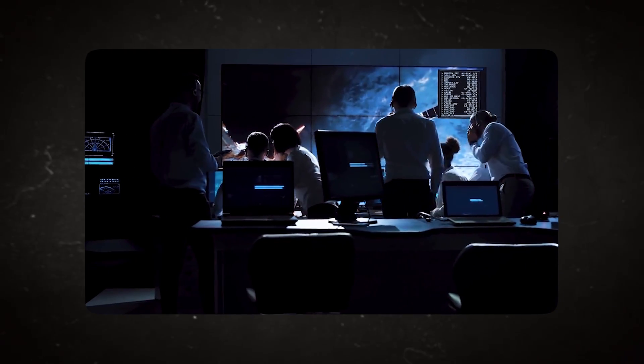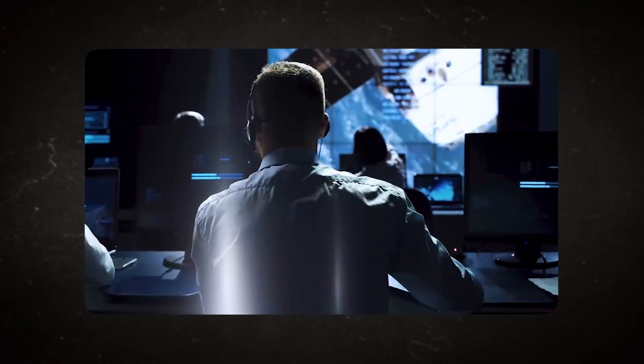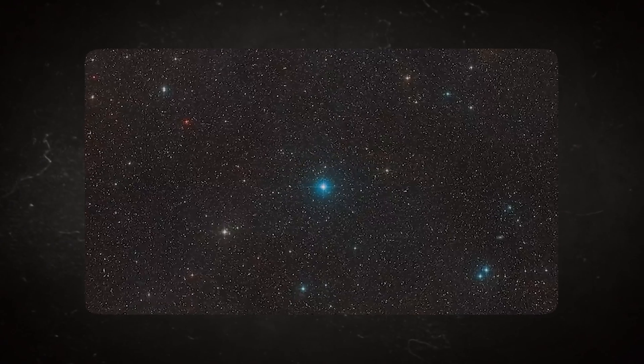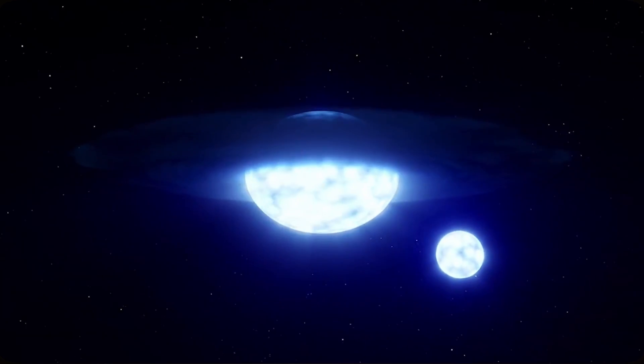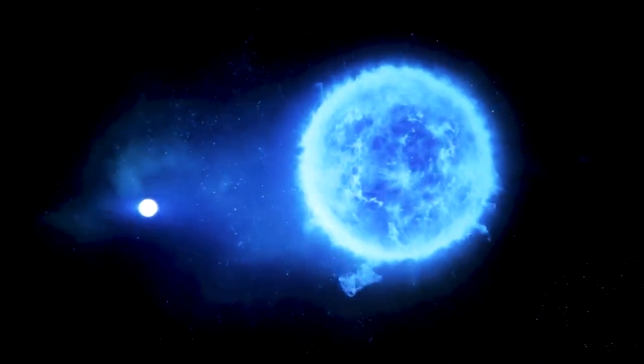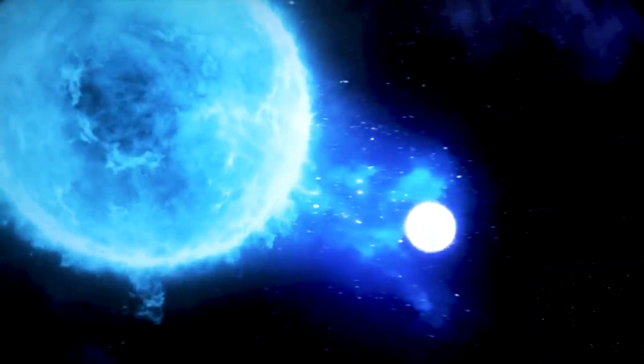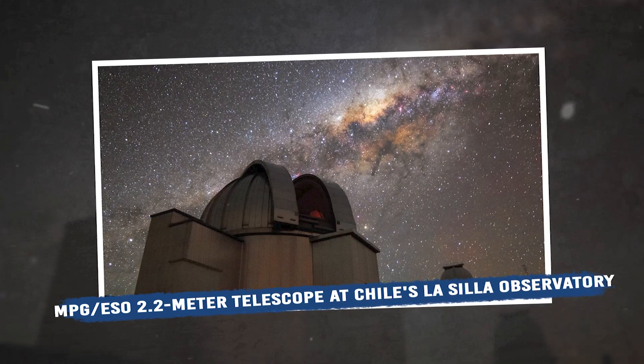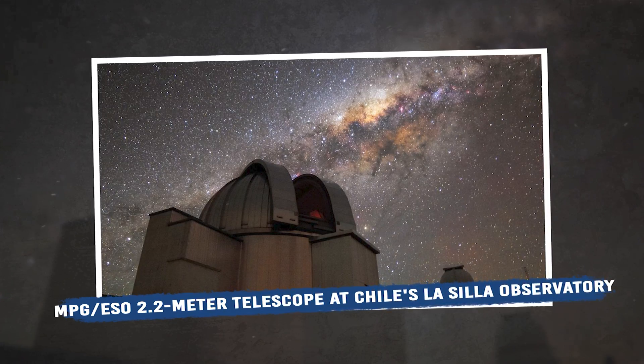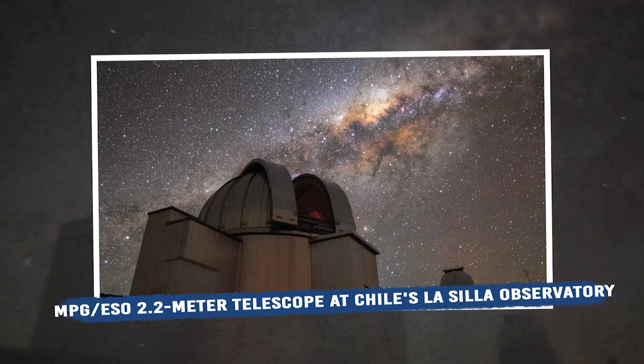This black hole was initially discovered by astronomers analyzing what they believed to be a binary star system in which two stars orbit around a common center of mass. The HR 6819 binary was observed as part of a larger research on double star systems using the MPG ESO 2.2 meter telescope at Chile's La Silla Observatory.